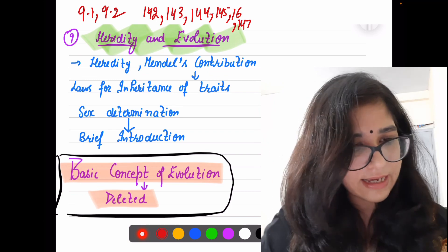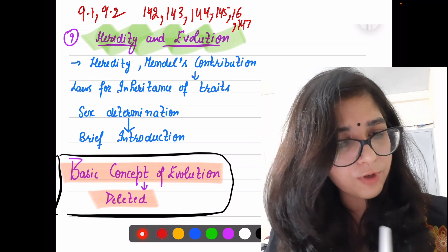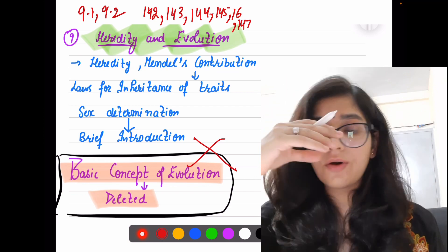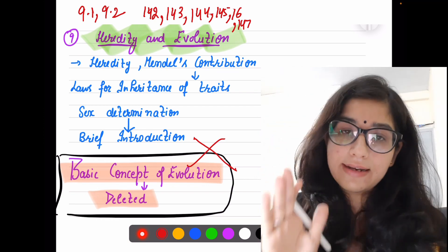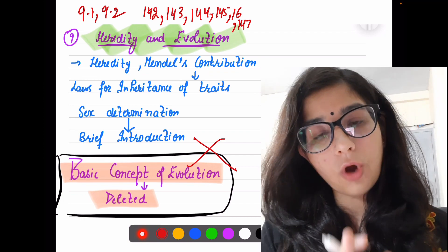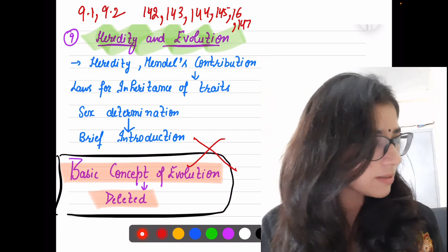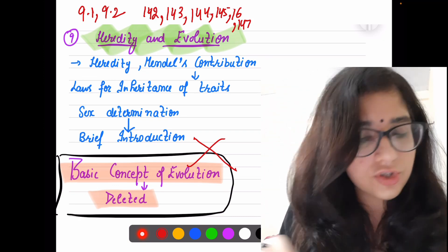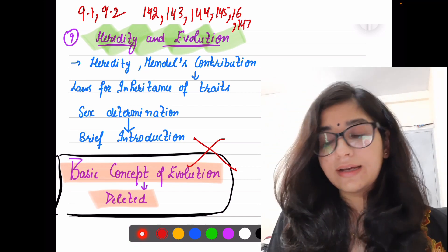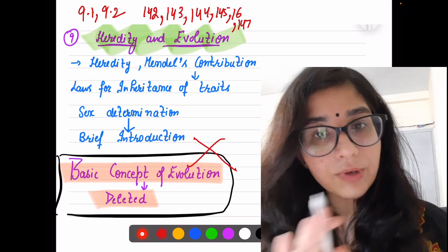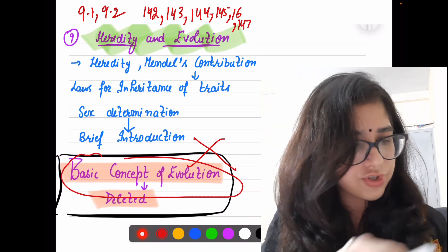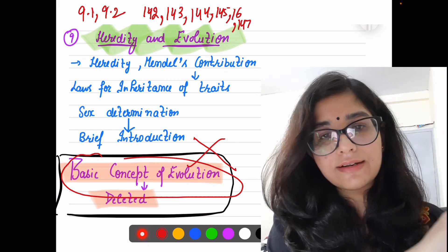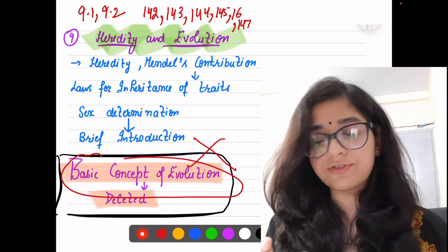From topic 9.3 to 9.6, complete Evolution has been deleted. Again repeating: only Heredity is to be studied — from page 142 to page 146, plus in-text questions on page 147. Evolution questions are not to be done. The basic concepts of evolution have been deleted for this year. We only have to study Heredity.